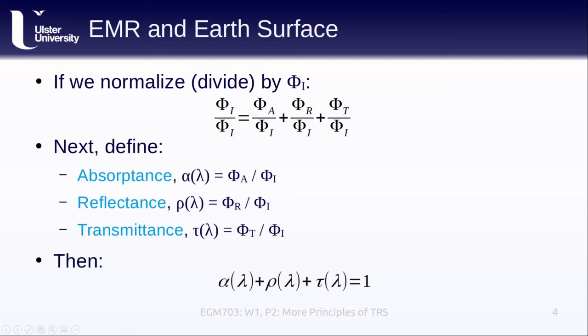So, if we put all of this together, then the absorptance, reflectance, and transmittance of a surface, or an object, or a material, should all sum to one.